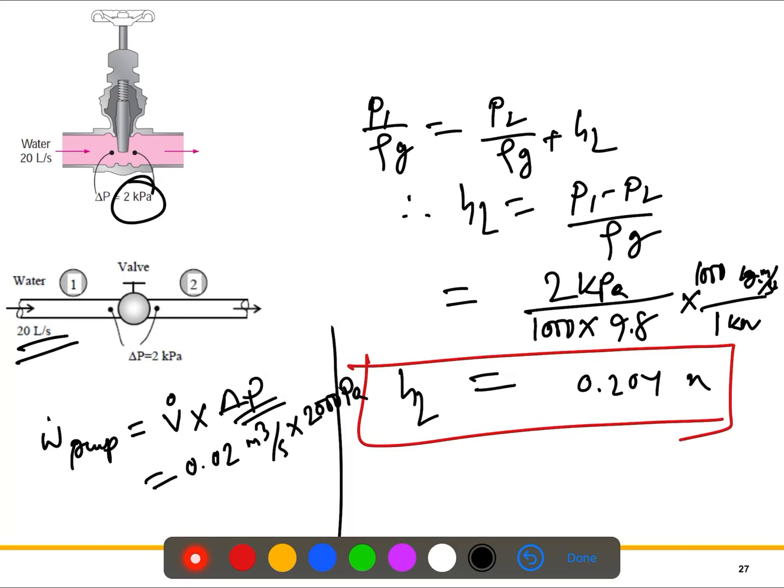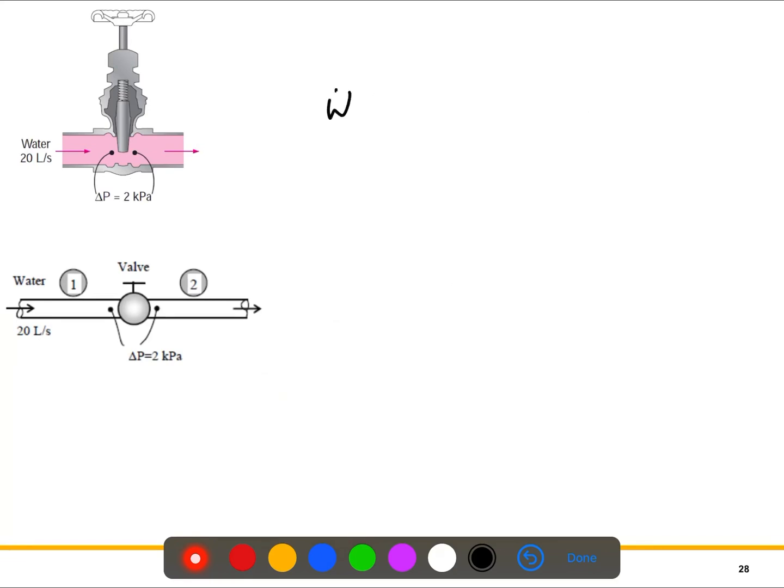So that means let's say 2000 Pascal, okay, 2000 Pascal. So I think I should write it down here clearly. So the Ẇ_pump, it is equal to V̇, 0.020, this is m³/s, I should write the unit here actually.